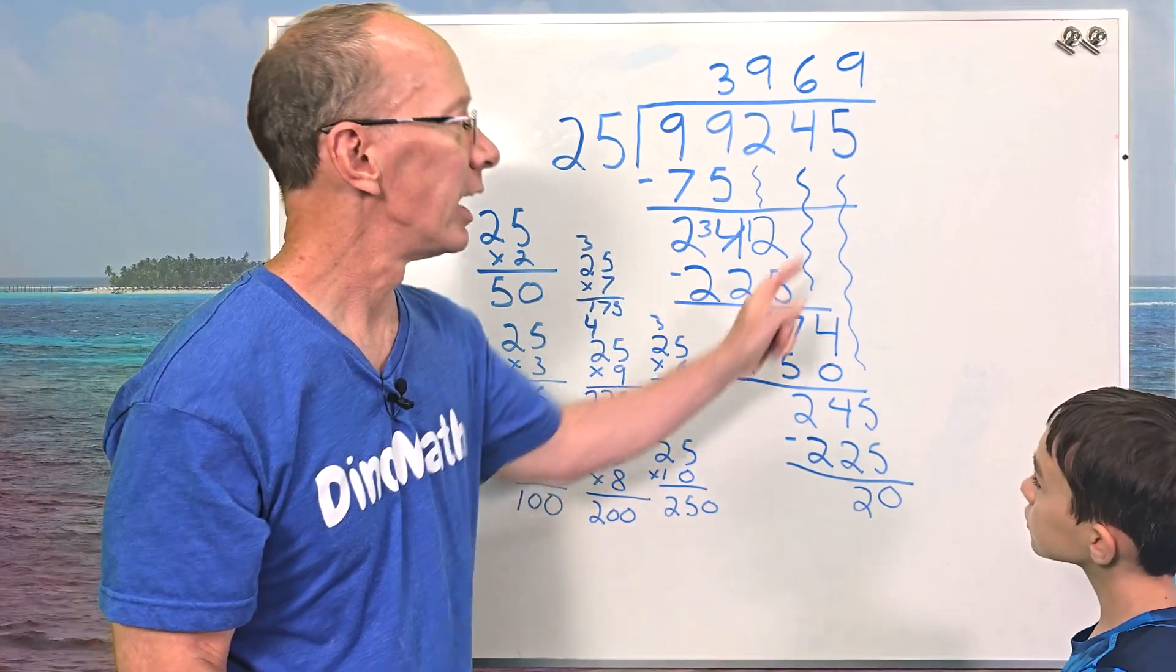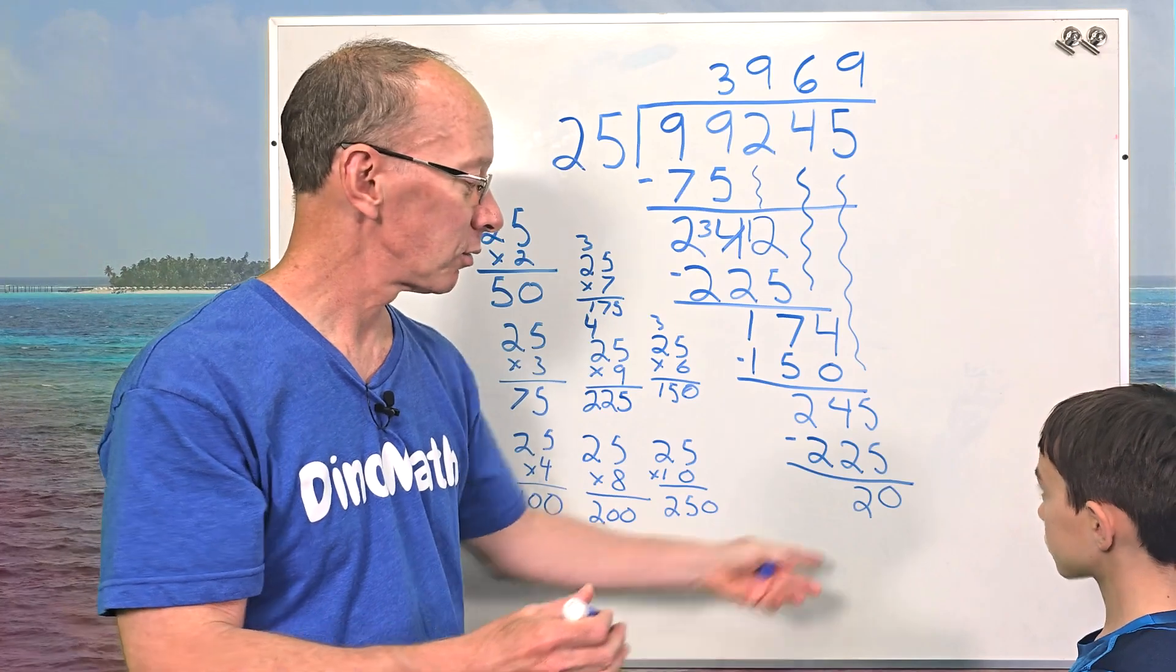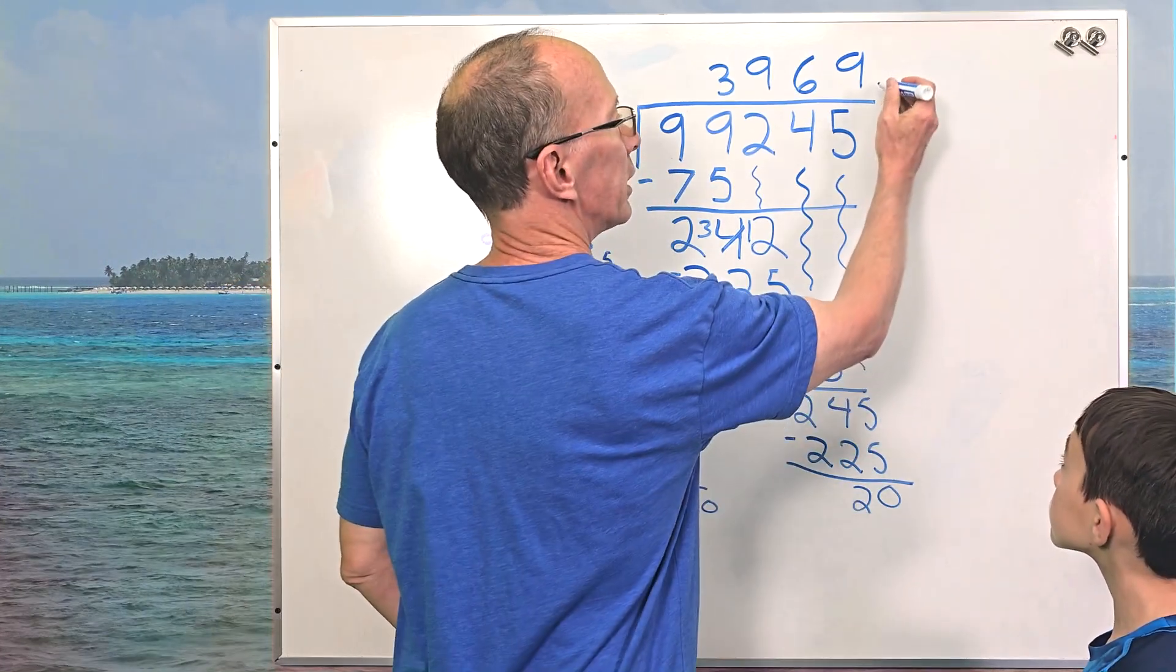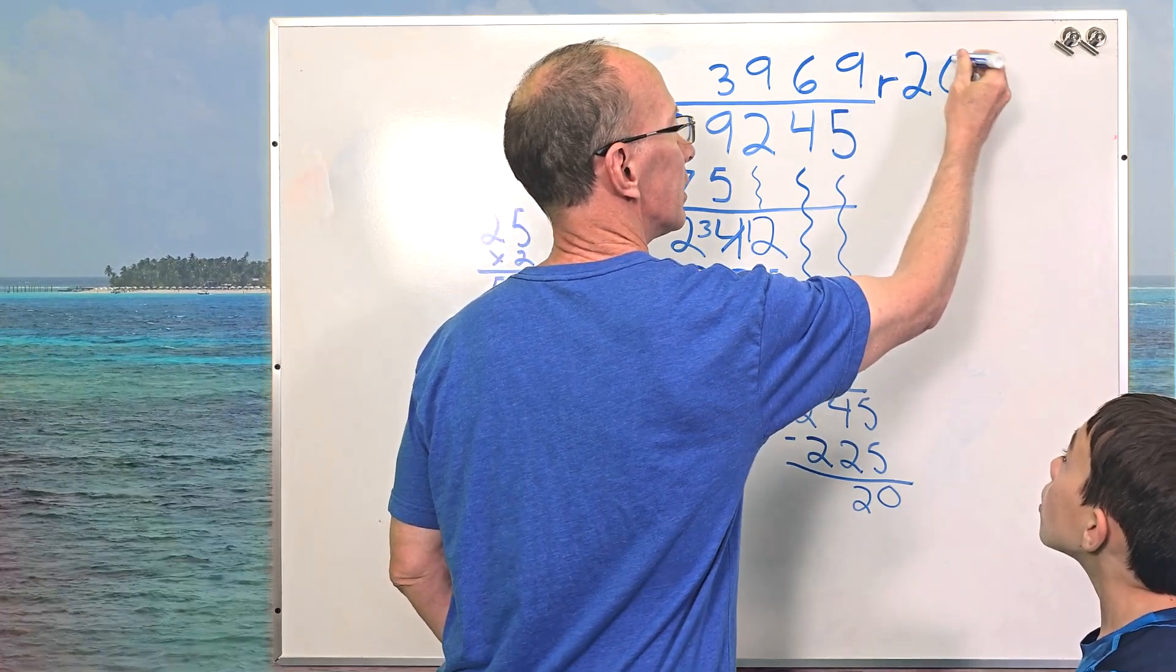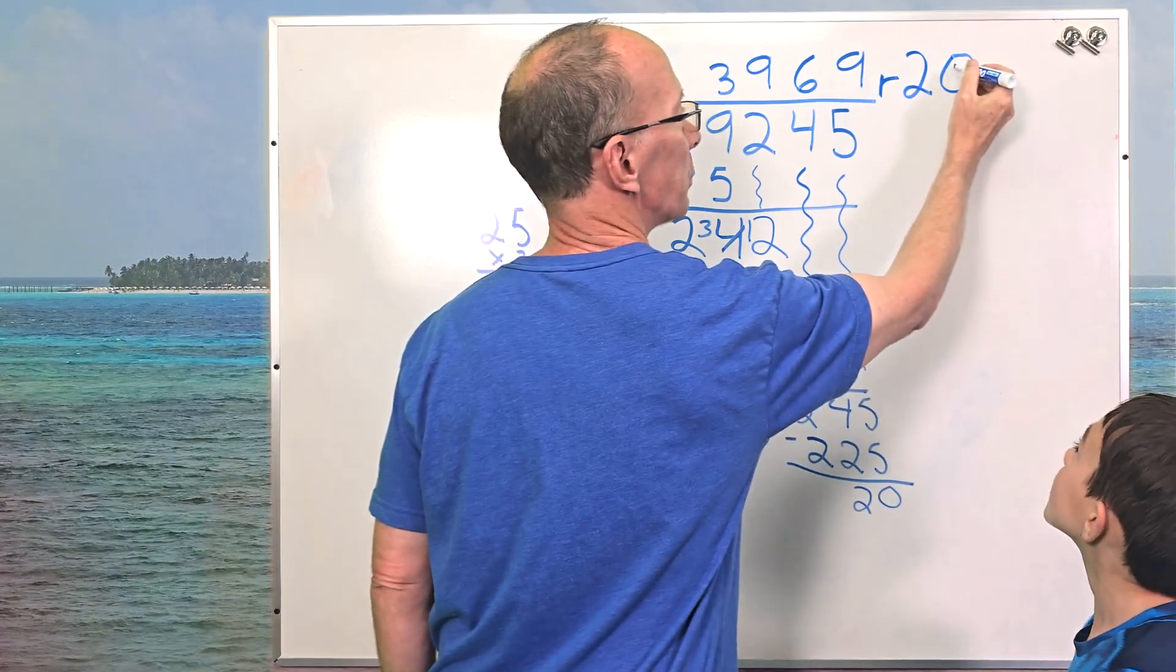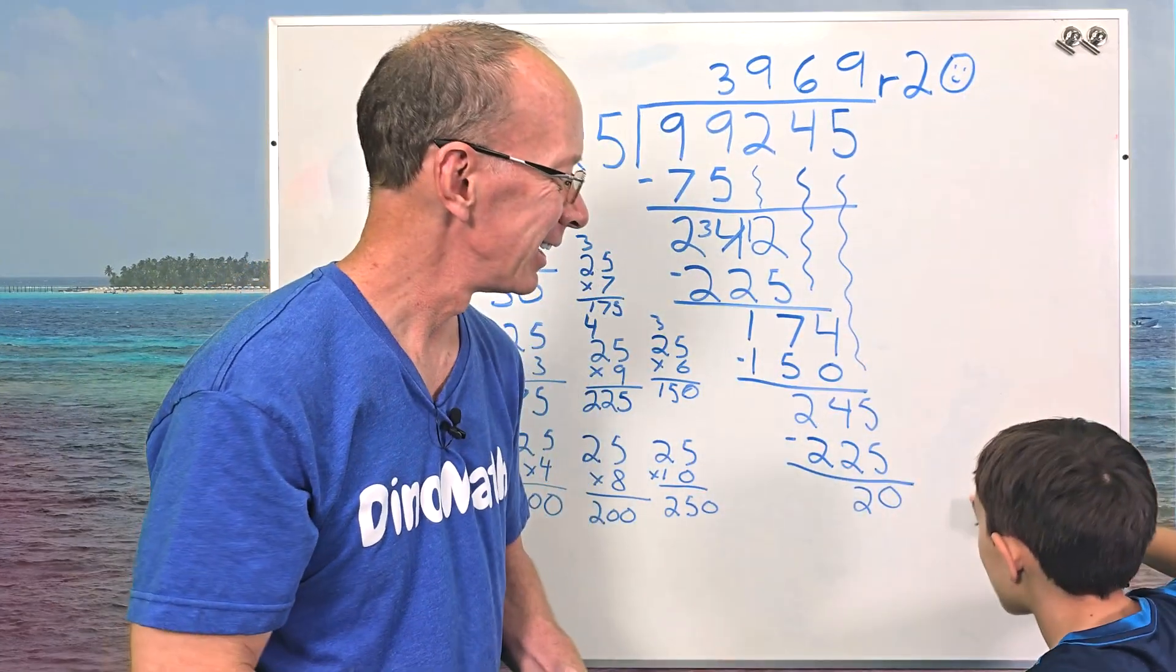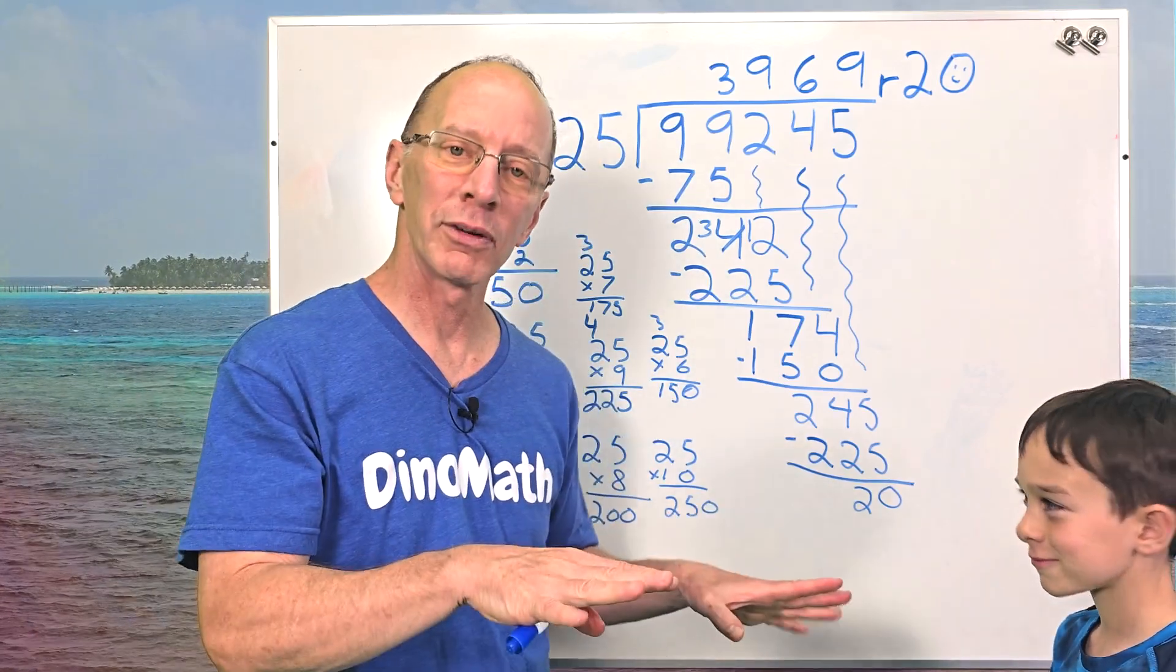This is our remainder. 20 is smaller than 25. I do not have any other number to bring down. So this is our remainder. Make that a little bit neater. 20 there. And so I put an R with a 20 right there. Or if we wanted to keep on going, we can even put a little smiley face in there too. If we wanted to keep on going, we can put decimals. I suppose you could put decimals, but we're just working with whole numbers right now.